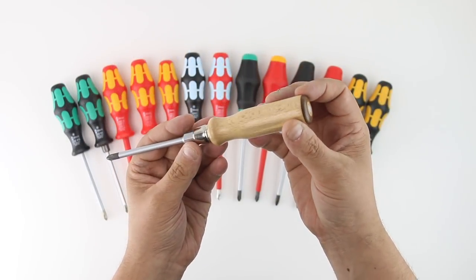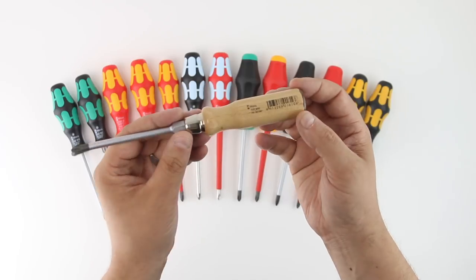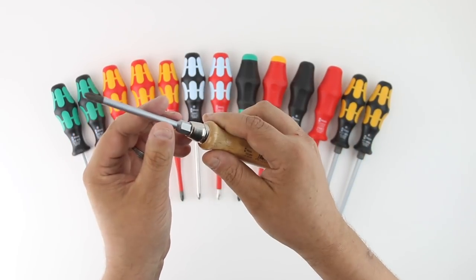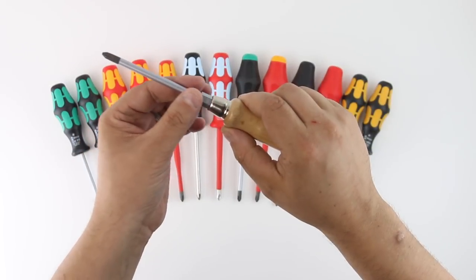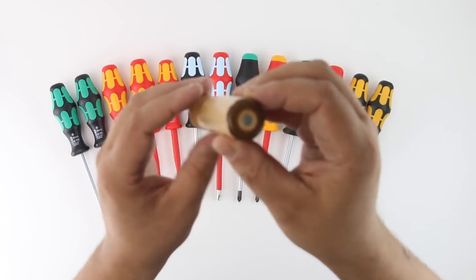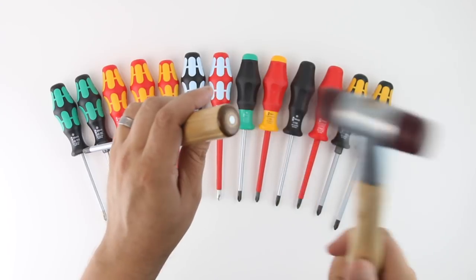One of the few Wera Drivers that doesn't have the Craftform design in the handle is their line of wooden handles. Though the wooden handles are a different shape, they are still well-designed to fit the hand with indents for fingers and a hex bolster built into the shaft. And just like the Chisel Drivers, the shaft runs from the end of the handle through to the tip, so striking with a hammer is a safe possibility.